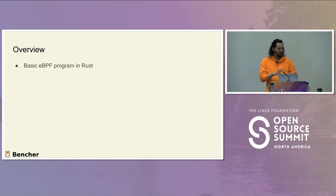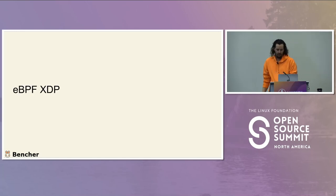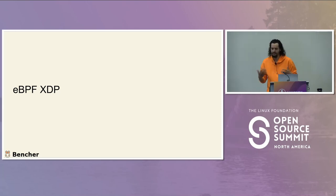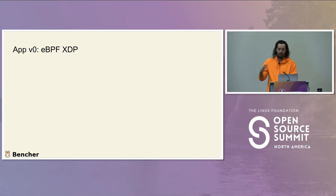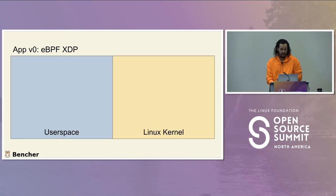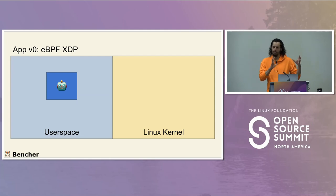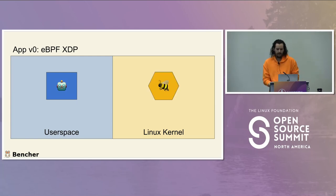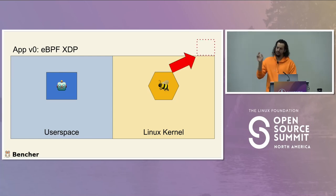Now onto our basic eBPF program. We're going to do an XDP program, which lets us intercept packets and make decisions on them — basically give a thumbs up or thumbs down on each packet. This is version zero of our eBPF app. All we're going to do is log the IPv4 source address of the packets we receive. On the user space side, we'll have an agent that spins things up. On the kernel side, we'll have eBPF code that gets the XDP packet, extracts the source address, and logs it.